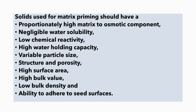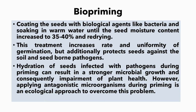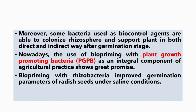Biopriming involves coating the seeds with biological agents like bacteria and soaking in warm water until the seed moisture content increases to 35 to 40 percent, then redrying. This treatment increases the rate and uniformity of germination and additionally protects seed against soil and seed-borne pathogens. Applying antagonistic microorganisms during priming is an ecological approach to overcome pathogen issues. Some bacteria used as biocontrol agents are able to colonize the rhizosphere and support plants both directly and indirectly after germination. Biopriming with plant growth promoting rhizobacteria as an integral component of agricultural practice shows great promise.